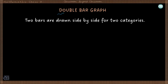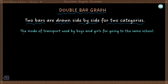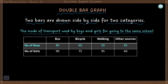There is another type of bar graph called the double bar graph. In this case, two rectangular bars are drawn side by side for two categories. In the previous case it was for one category, say the score of Virat Kohli. If compared with another player, there would be two categories. Here the example shows the mode of transport used by boys and girls going to the same school. Category one is boys and category two is girls.